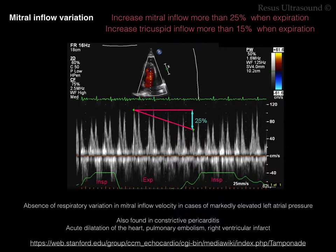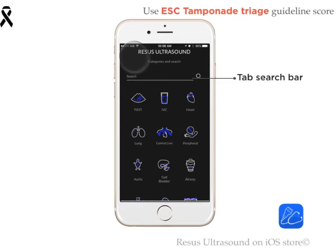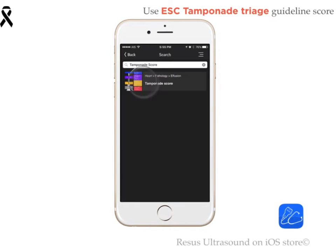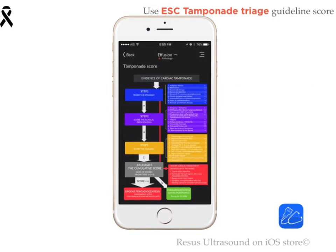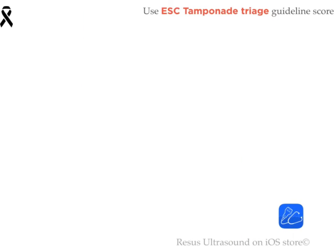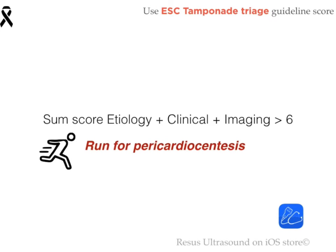You can find reference material in our app — download it for free and search for the tamponade score from the ESC to review other clinical criteria and echocardiographic signs for urgent clinical decision-making. Thank you very much.